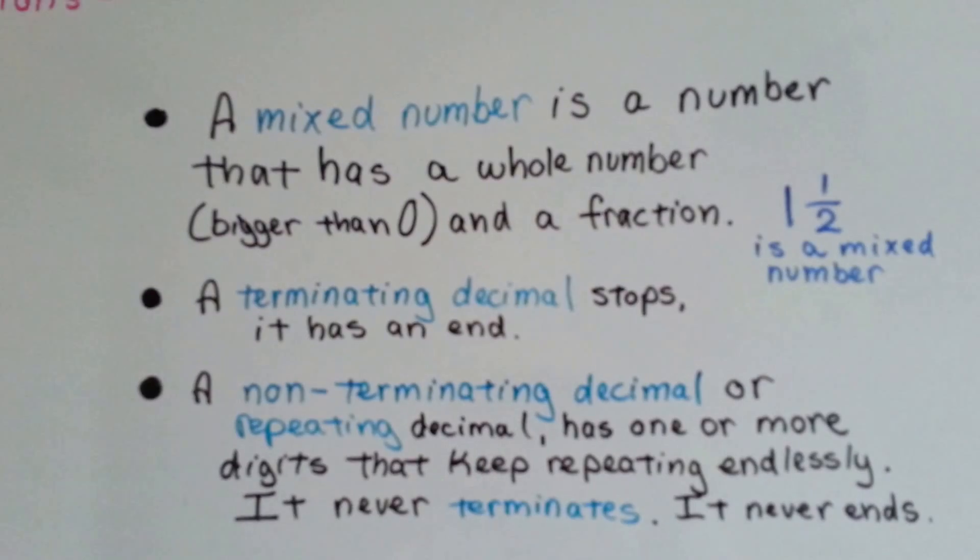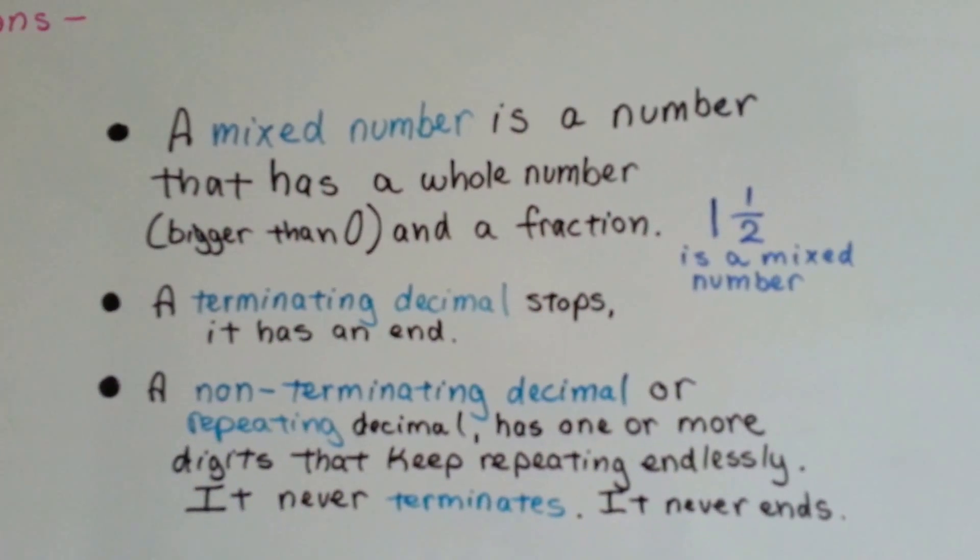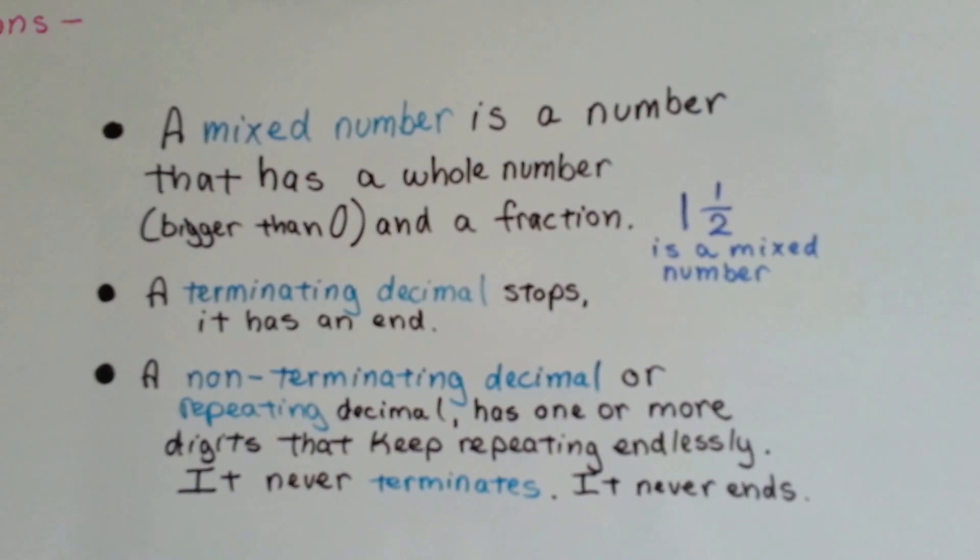A mixed number is a number that has a whole number, bigger than zero, and a fraction, like one and a half. The one is the whole number, and the half is the fraction.